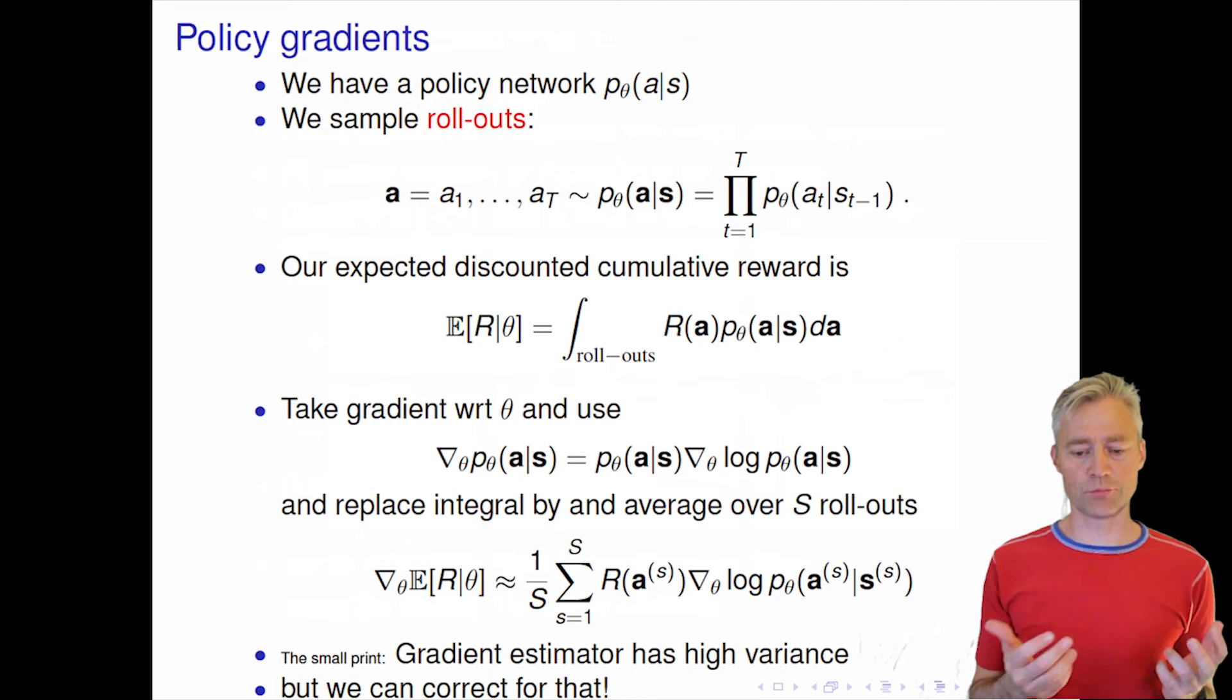So you can see in principle it's very easy. We take the reward, which could be, for example, the reward we had from the AlphaGo.